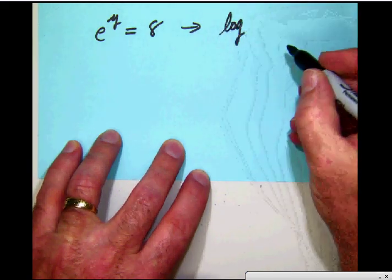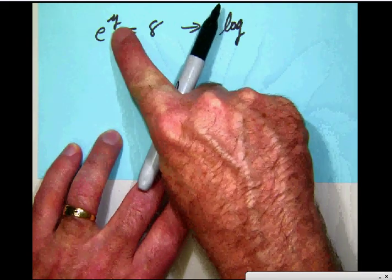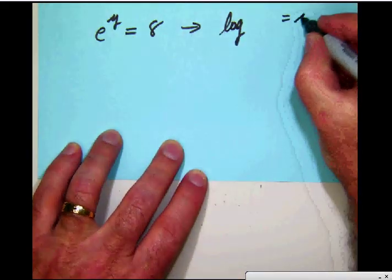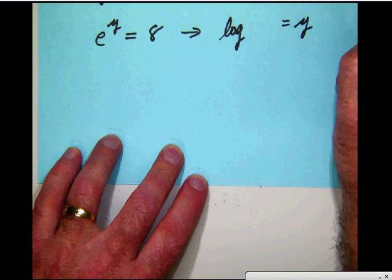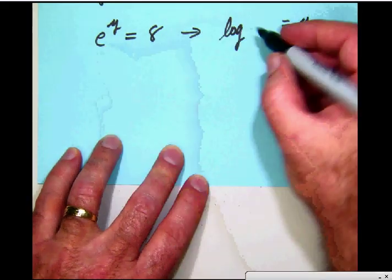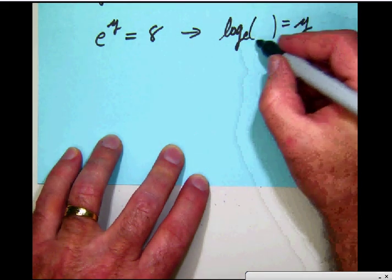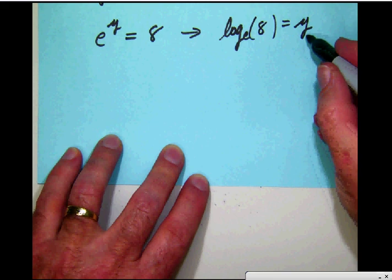Now once again a logarithm. What is it? Well it's an exponent. What's the exponent here? y. So we know the logarithm equals y. Now of course we have to have a base for our logarithms. And in this case our base is e. So we will put the little e down here. Obviously we're taking the logarithm of the number 8 in order to get y.